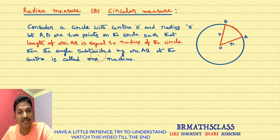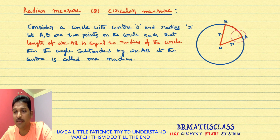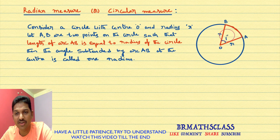Then, the angle subtended by arc AB at the center is called one radian. You observe the diagram — this is the arc AB, and this is the angle subtended by arc AB at the center. This angle is known as one radian, and one radian is denoted by 1 superscript C.